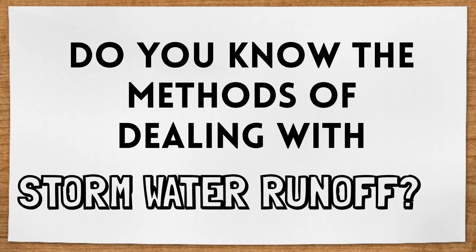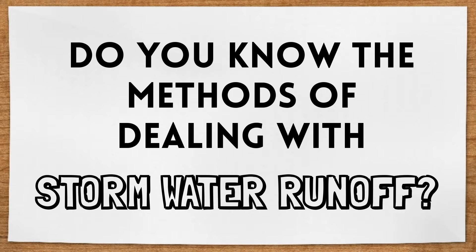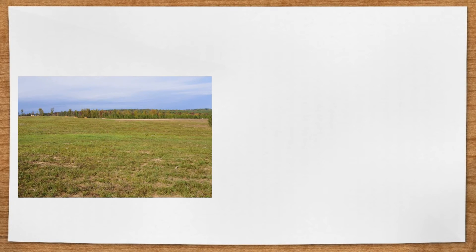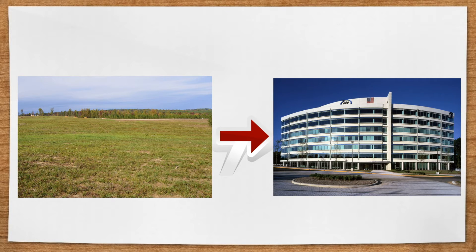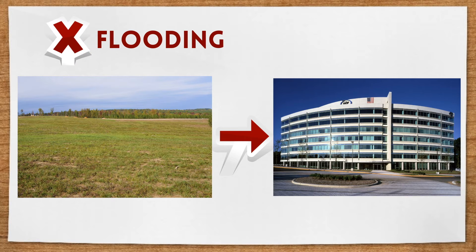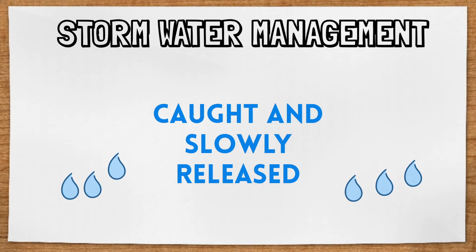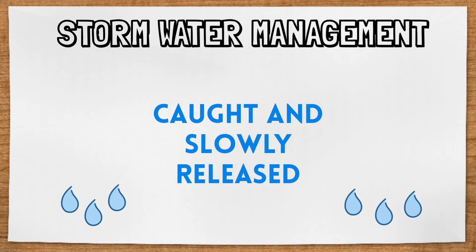Do you know the different methods of dealing with stormwater runoff? In this video, we'll discuss a few. As communities grow and impervious surfaces continue to replace grass and dirt, stormwater runoff can start to overwhelm city sewers and damage streams and rivers through flooding and erosion. By using different stormwater management systems, rainwater can be caught and slowly released back into the ground, rivers, streams, and storm sewers without causing any flooding or erosion. There are a few different options for stormwater management, so let's start with the ponds.